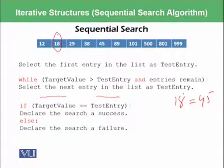So then we will be checking if 18 is equal to 45 or not. And if that is found we will say that we have a success. Else we will declare the search a failure.